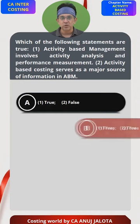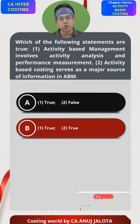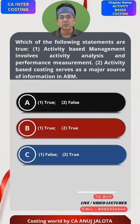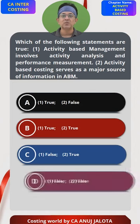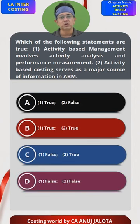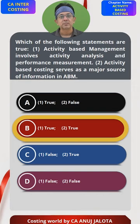Looking at the four options: first is True and False, second is True and True, third is False and True, and last is False and False. So the answer should be B — both of them are true. That's the correct answer.